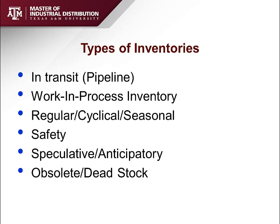Regular, cyclical, or seasonal inventories reflect demand patterns. Safety inventory or safety stock accounts for uncertainty — we keep additional inventory in case demand exceeds our expectation or in case of a delivery delay from the supplier. Speculative or anticipatory inventory is kept when you expect a future event, such as a price increase.